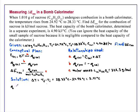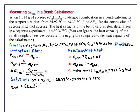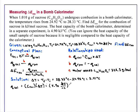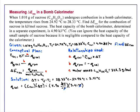The heat that is absorbed by the calorimeter is equal to the heat capacity of the calorimeter times the temperature change — that is 4.90 kilojoules per degree C times 3.41 degrees C. The degrees C cancel out, and we arrive at 16.7 kilojoules of energy absorbed by the calorimeter.